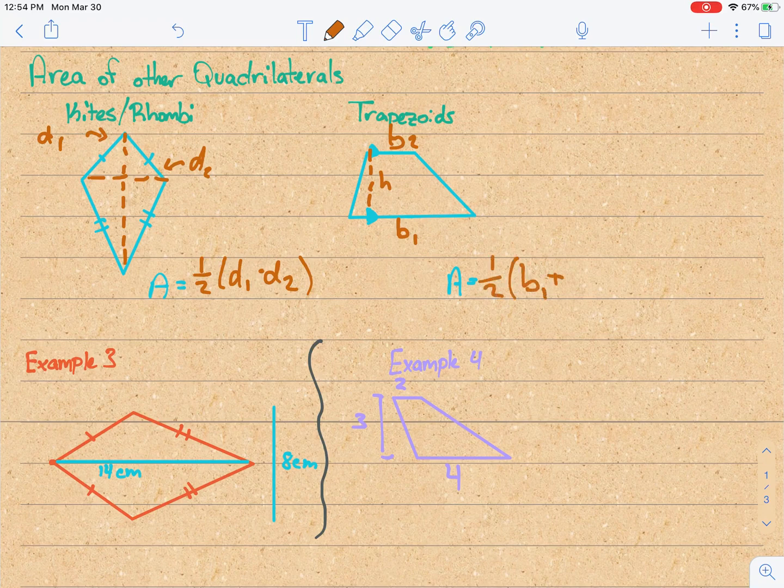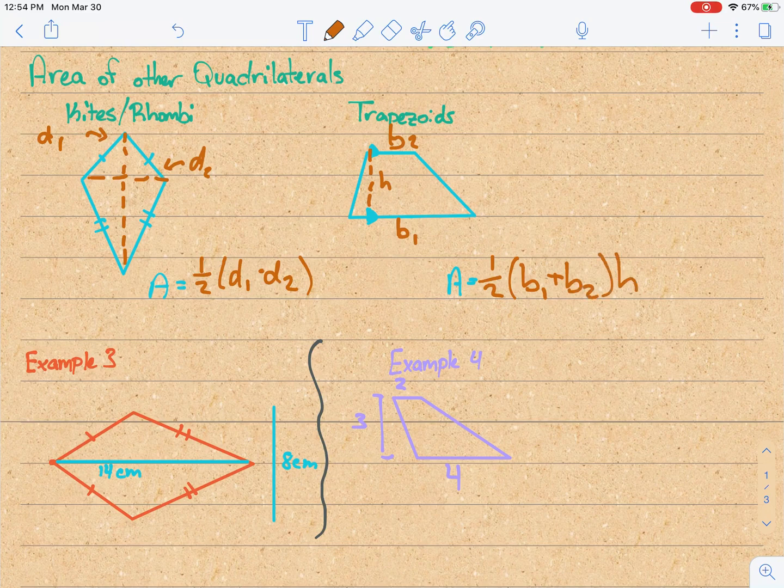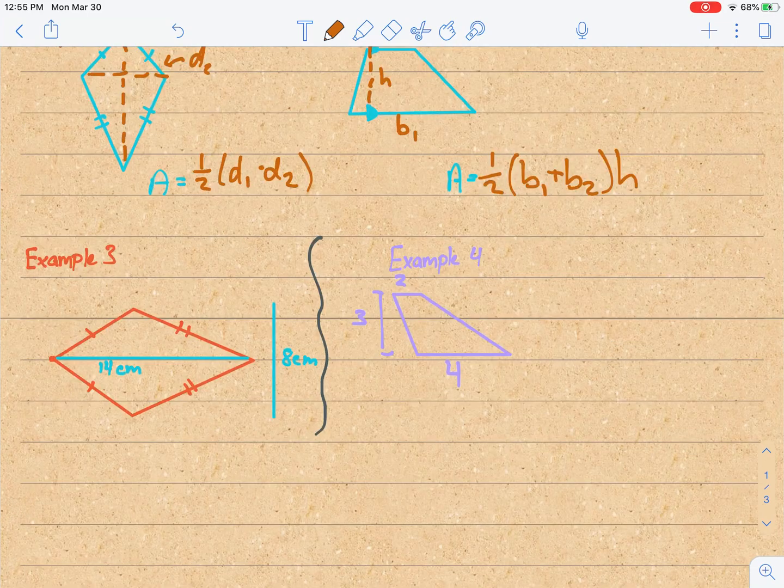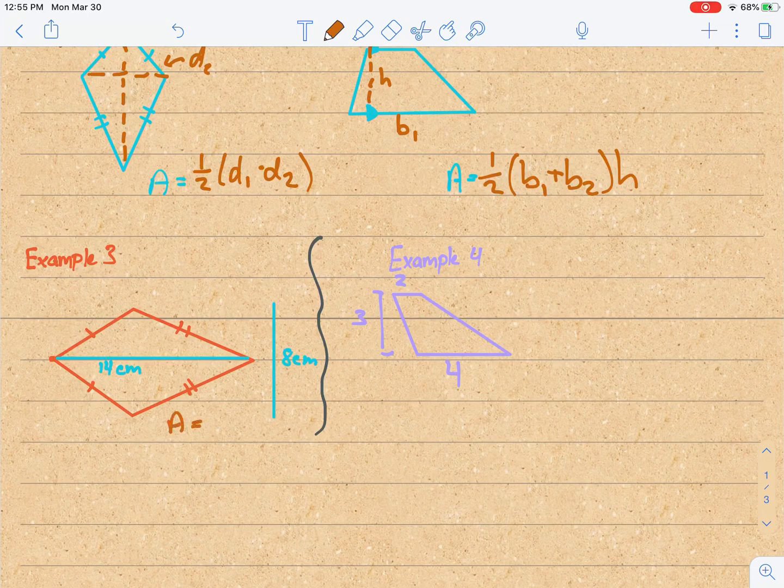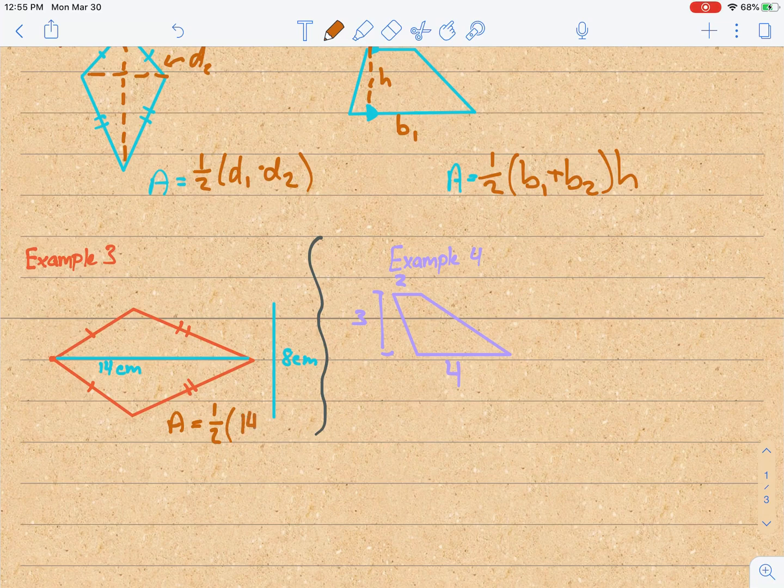So let's see an example of both of these in action. First one is a kite. So I'm going to go 1/2, diagonal 1, which is 14, multiplied by diagonal 2, which is 8. If we type this into the calculator, we will get that it is 56 centimeters squared.